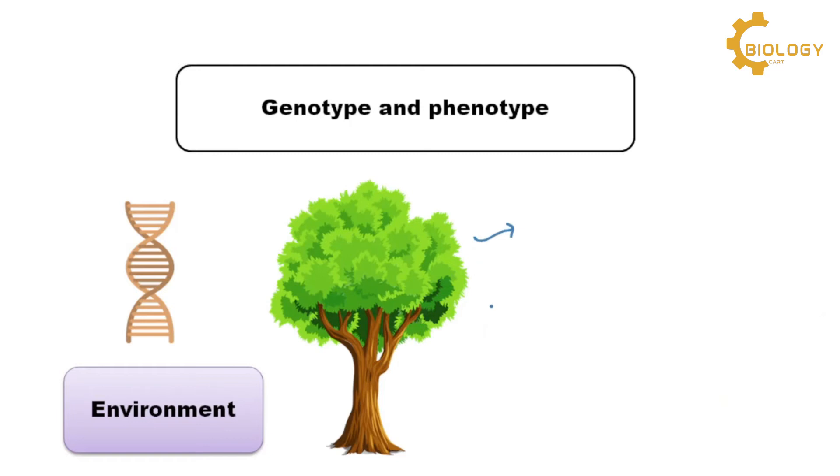when we talk about a plant and we talk about its character height, genes are responsible. These genes set a boundary or a limit. The plant has the potential of reaching a height of about 10 meters. For example, this is the potential of the genotype. It can reach a maximum height of 10 meters.